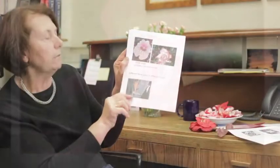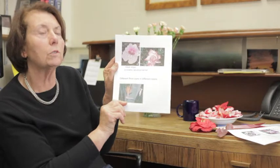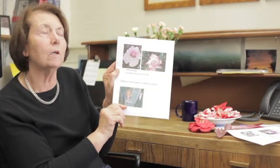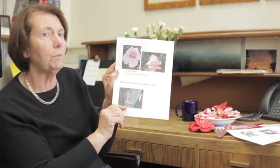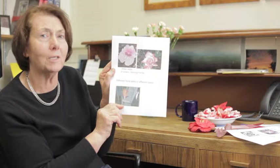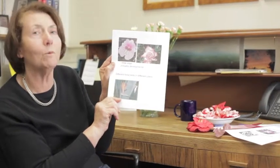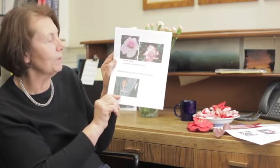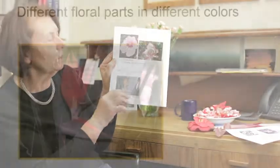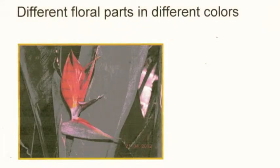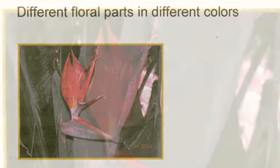And then finally, in this picture of a bird of paradise — which happens to be the city flower for Los Angeles, California, where I was born; I love the birds of paradise — we see that each part of the flower is a different color. We have orange parts, purple parts, and red parts. So depending on the kind of organ in the flower, we have a different color.